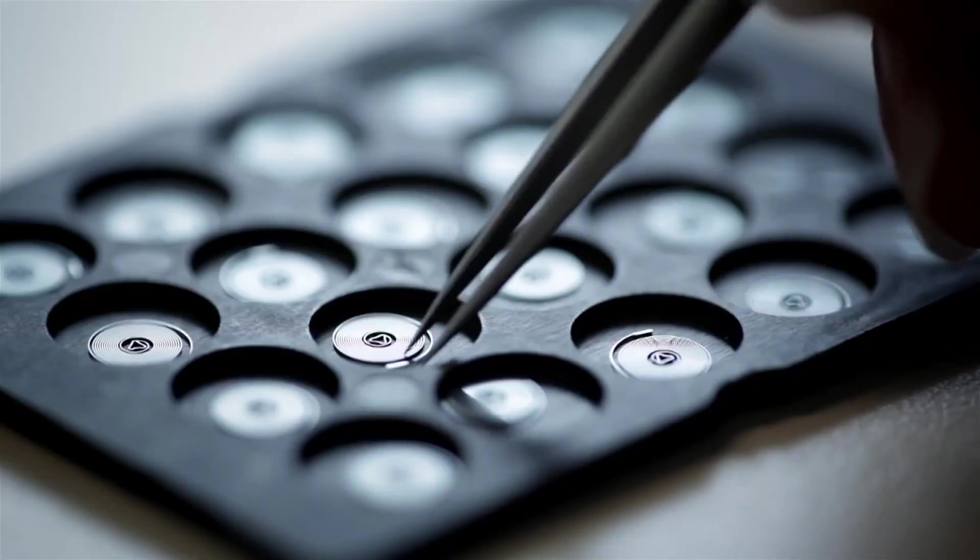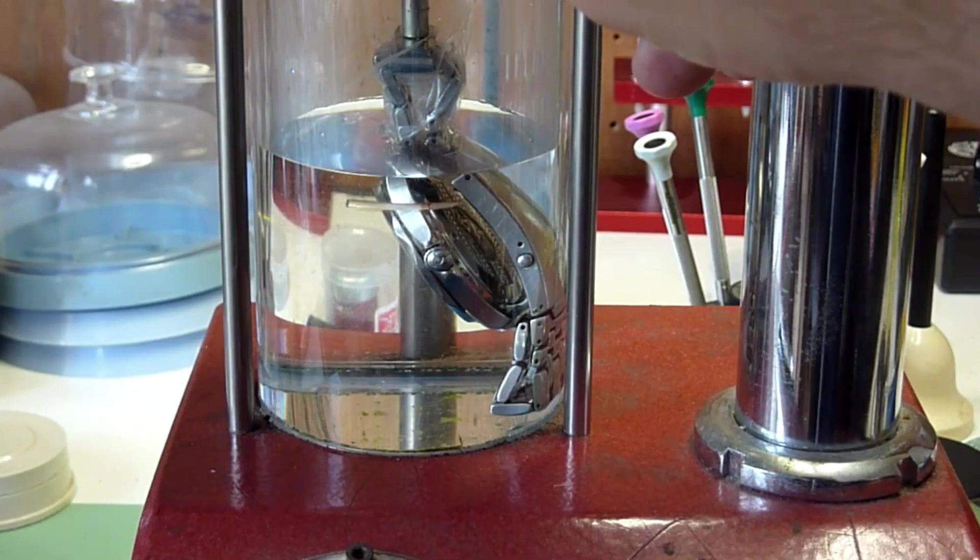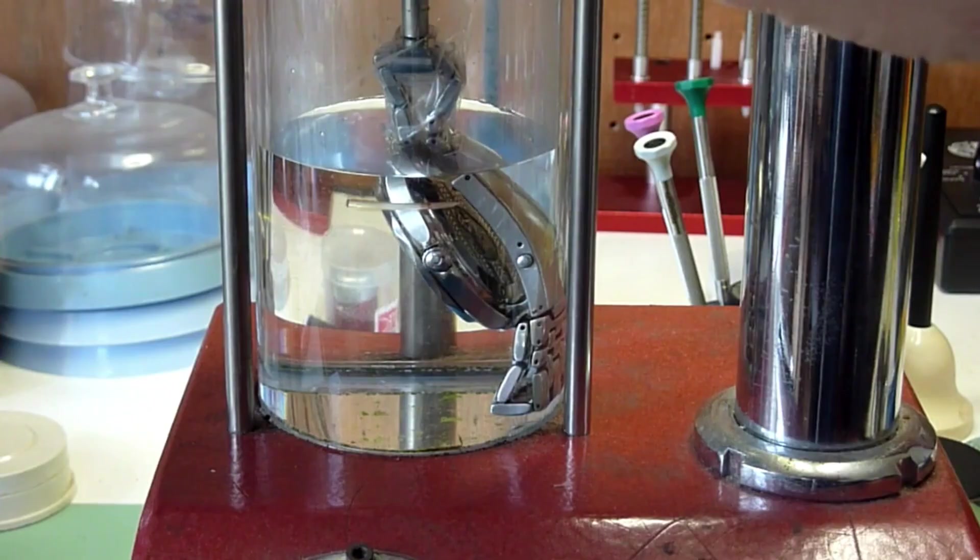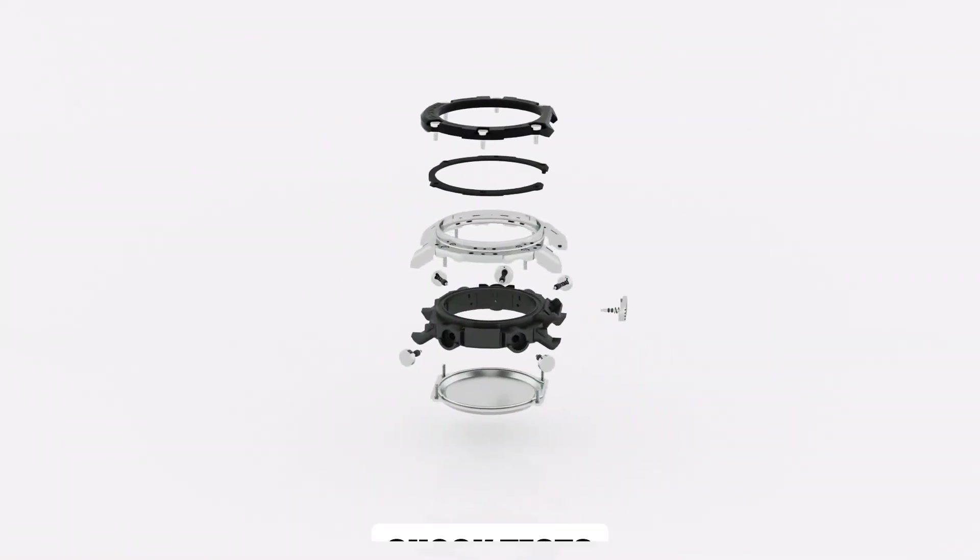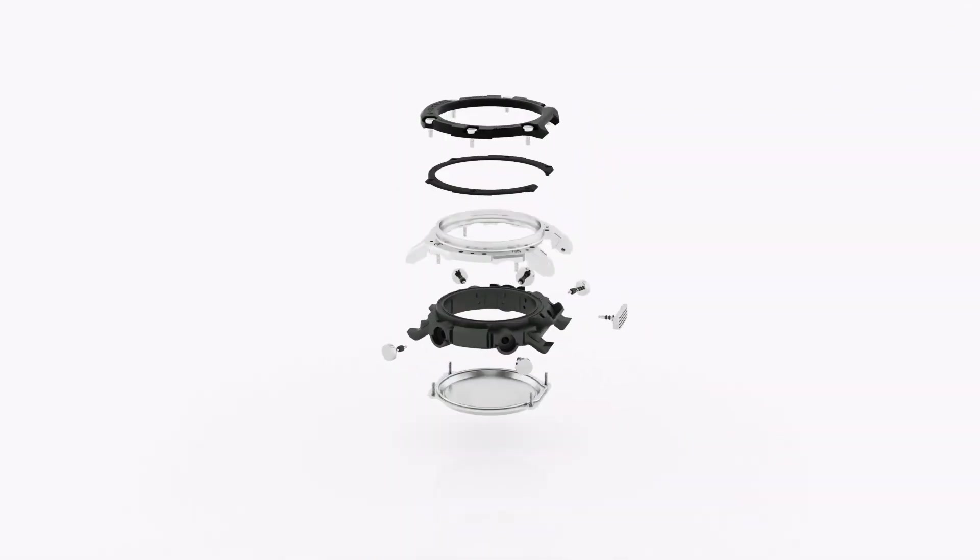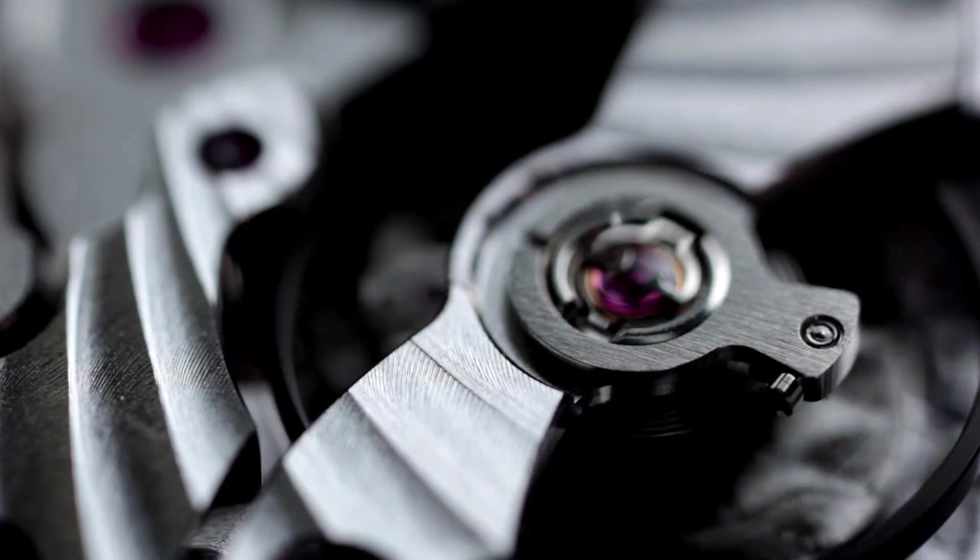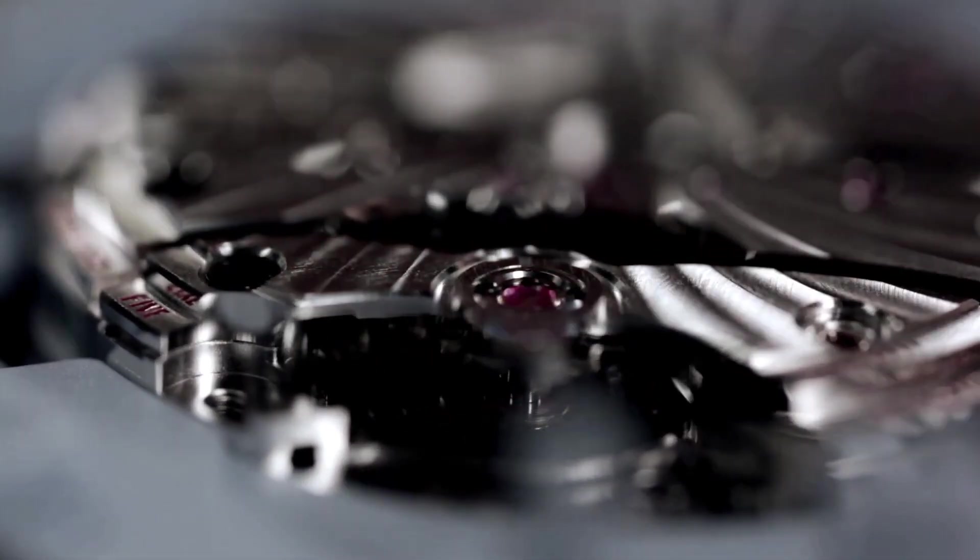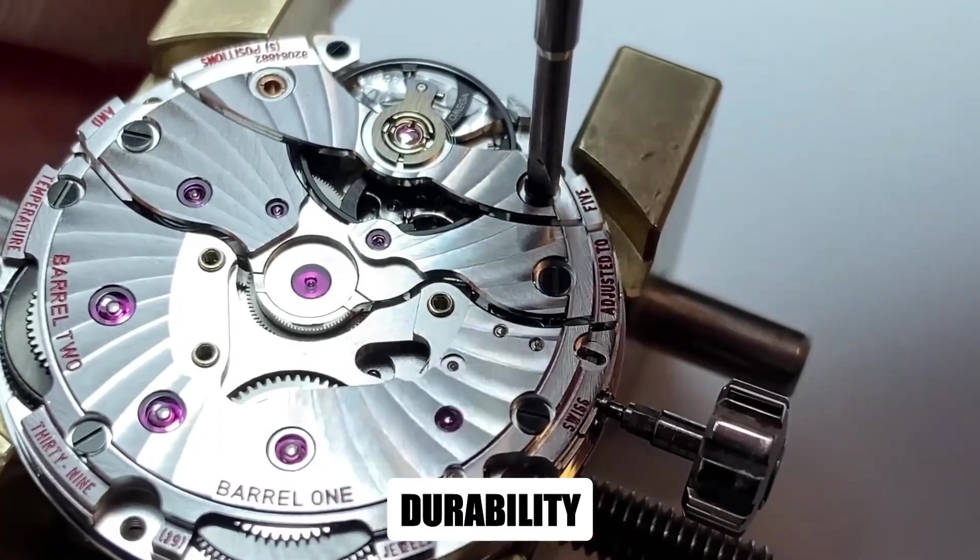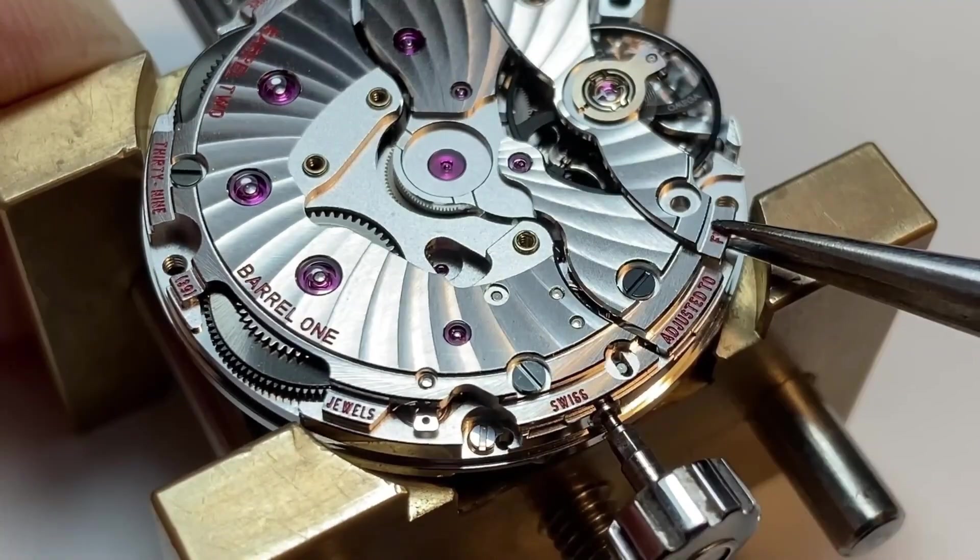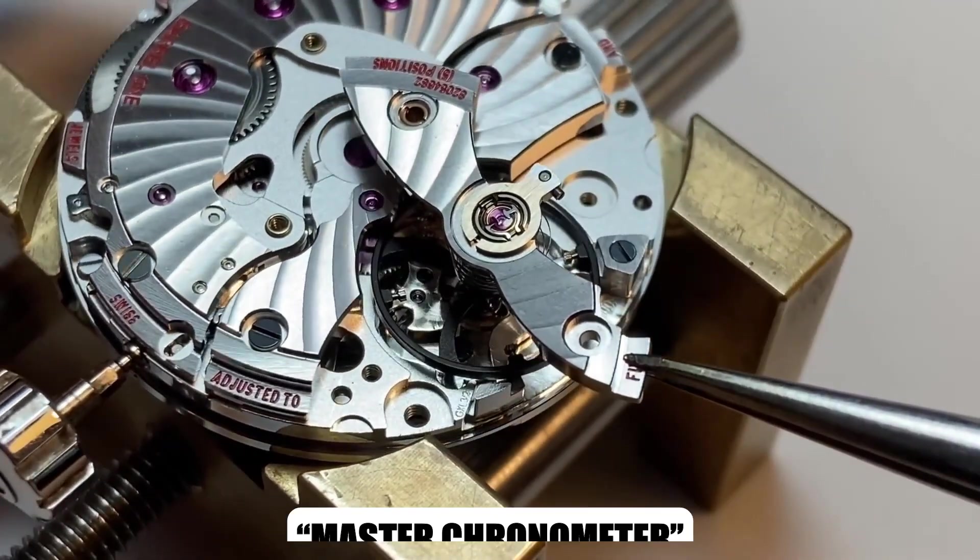Then the gauntlet continues. Watches are submerged, pressurized, and forced to prove their water resistance in chambers simulating depths far beyond casual swimming. Next, shock tests mimic sudden impacts, drops, or the jolt of an athlete's wrist. Precision isn't optional, it's demanded. Finally, certification. Each watch undergoes METAS testing, the Swiss industry's most rigorous standard. Accuracy, durability, resistance, all measured, logged, and verified. Only when it passes every trial does an Omega earn the title of master chronometer.